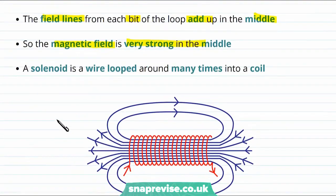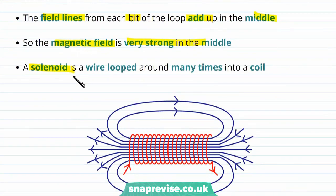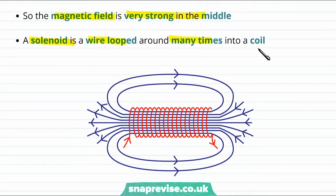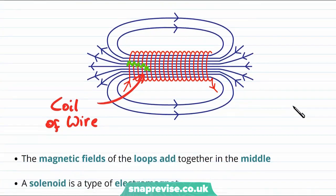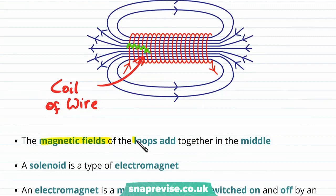But why stop at adding just one more loop? Instead we make a solenoid. A solenoid is a wire which is looped around many times to make a coil. So here is our coil of wire, and when we put a current through this coil of wire what we have is a load of loops of current which are all next to each other. And of course then the great thing about these loops is that the magnetic fields of the loops all add together in the middle.